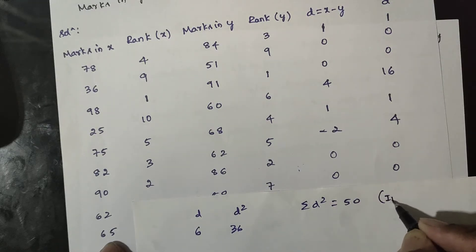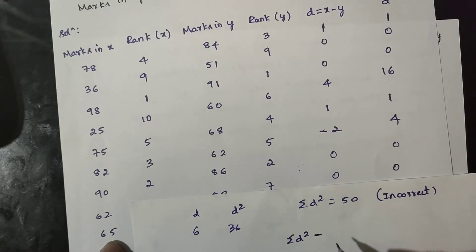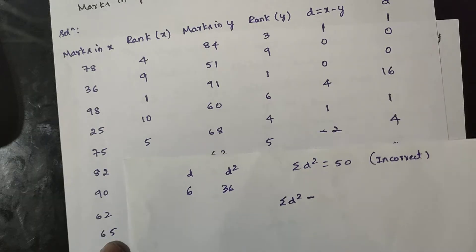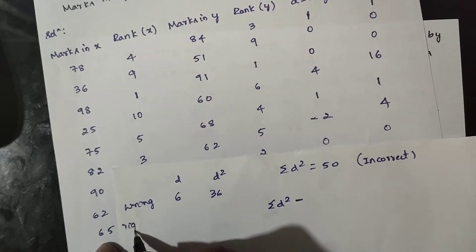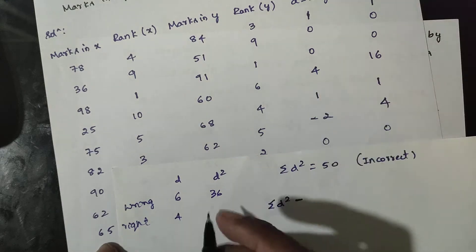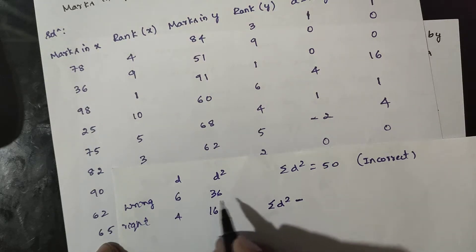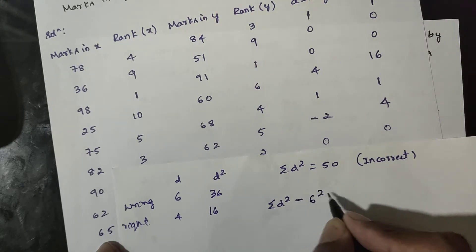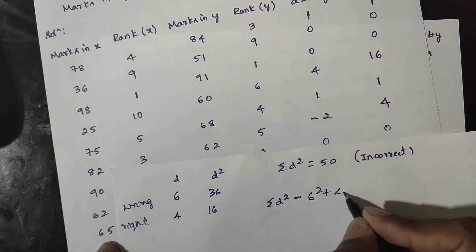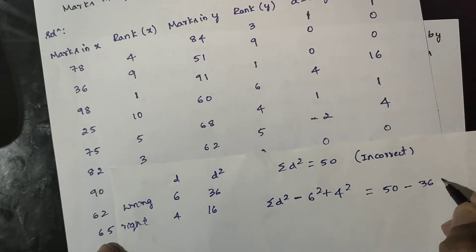This value is incorrect. The correct sum must be found. The wrong d² value is 36, which is incorrect. The correct difference is 4, so the correct d² is 16. The wrong d² was 36 (difference of 6). Therefore, the corrected summation of d² equals 50 minus 36 plus 16.